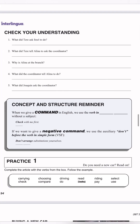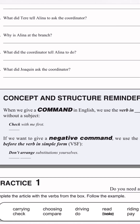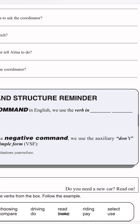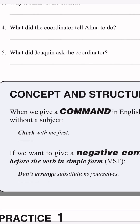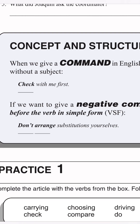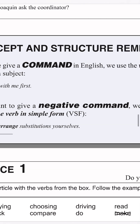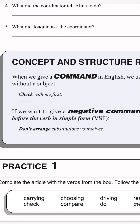We have here the concept and structure reminder. When we give a command in English, we use the verb in simple form with no subject. For example: check with me first. If we want to give a negative command, we use the auxiliary 'don't' before the verb in simple form. For example: don't arrange substitutions yourselves.